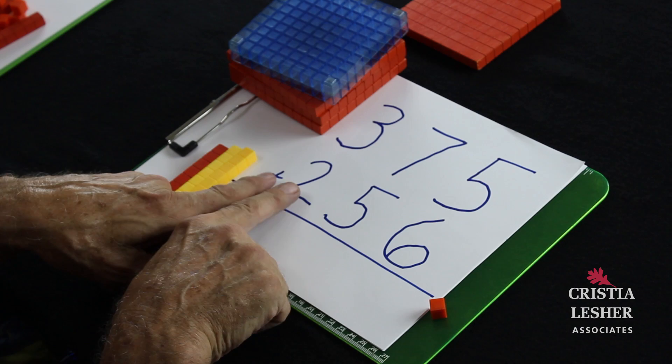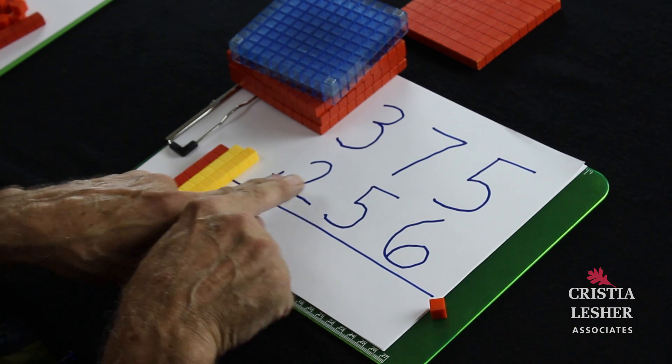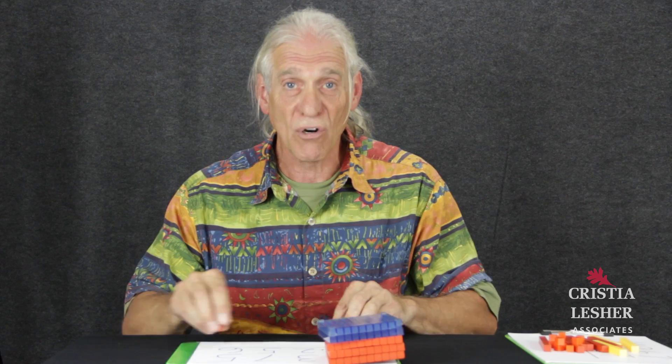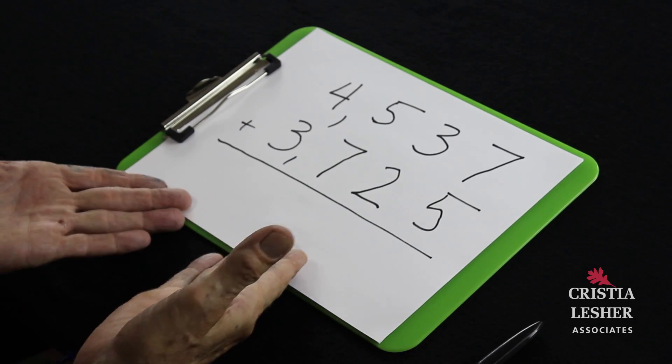All I've done is count by hundreds, then count by tens, and then count by ones. Let me show you a larger example. This is an example of adding 2 four-digit numbers.